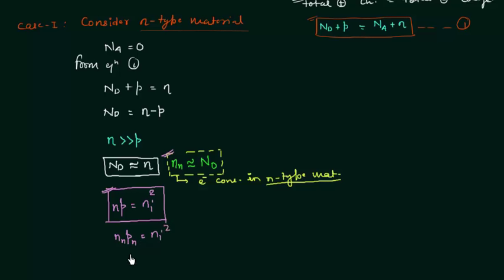The important results to remember from this presentation are: p_n = n_i² / N_d for n-type material and n_p = n_i² / N_a for p-type material. We will use these results in numerical problems. Also remember the concept of electrical neutrality, which applies not only to semiconductors but also to conductors.